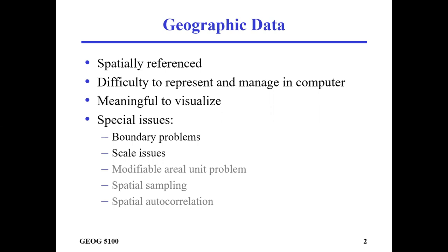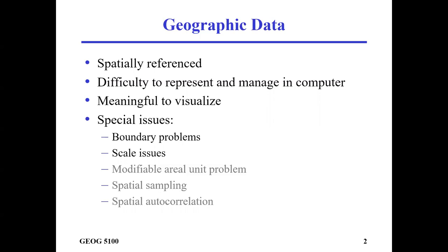Geographic data is data that is spatially referenced, which means that in a geographic dataset we have different geographic entities. These entities could be a polygon, could be a point, could be a linear feature. But no matter what, each feature or each geographic entity has associated location information, meaning each entity in a geographic dataset exists in a context of space. Geographic datasets are always spatially referenced.